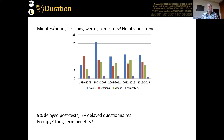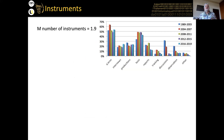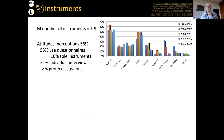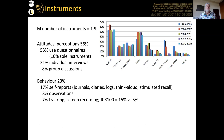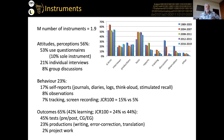Coupled with that, fewer than 10% of studies have a delayed post-test, and only around 5% have delayed questionnaires. If we're thinking in terms of ecological validity — what really happens in class — we're not necessarily looking in the right places. Most studies use more than one instrument: questionnaires and tests are the most frequent, with questionnaires used especially for learners' attitudes and perceptions — 53% of all studies used a questionnaire. Interviews and group discussions are also used. For behavior, self-report and observations feature, but not much tracking.